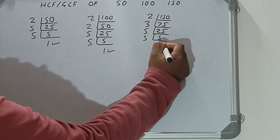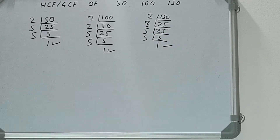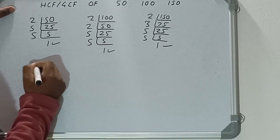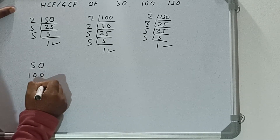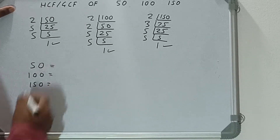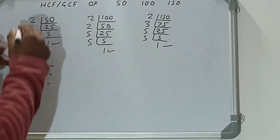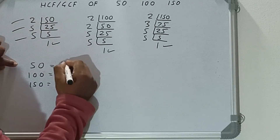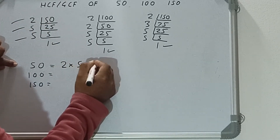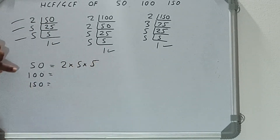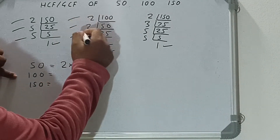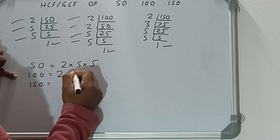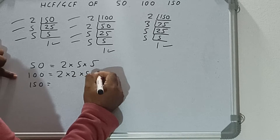Now in the next step we write down each number with its respective prime factors. For 50 we got: 2 × 5 × 5. For 100 we got: 2 × 2 × 5 × 5. And for 150 we got: 2 × 3 × 5 × 5.